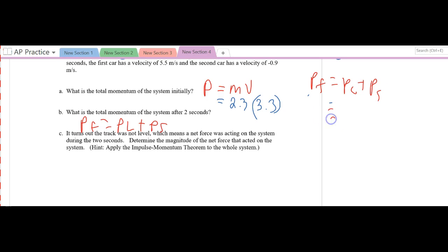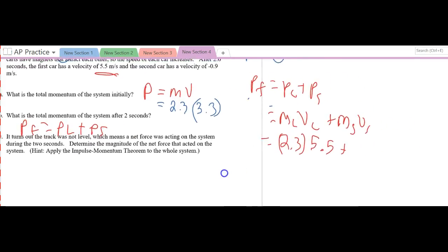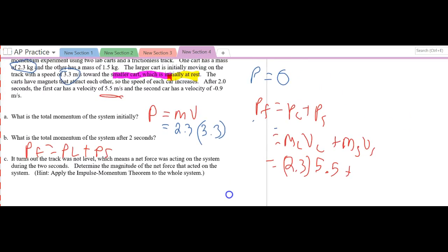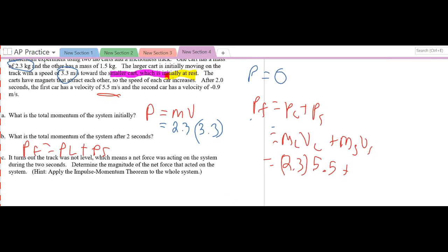So now I can look at this. Momentum final equals mass of large times velocity of large plus mass of small, velocity of small, again final. My mass of the large we said was 2.3. The velocity I can see right here is 5.5, plus the mass of the small, which was 1.5.